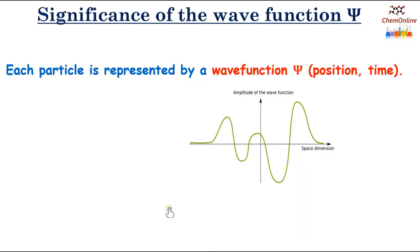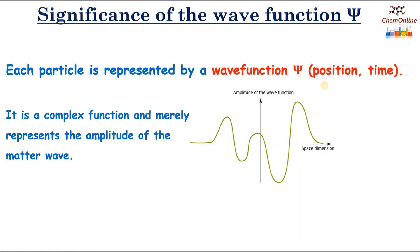In quantum mechanics, each particle is represented by a wave function ψ which depends on the position coordinates x, y, z and time. The wave function is a complex function and it is merely the amplitude of the matter wave.